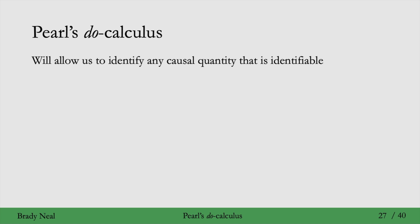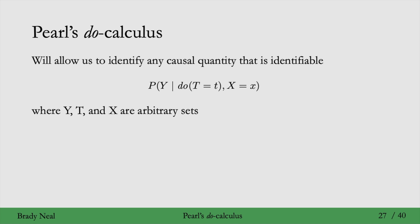Using Pearl's do-calculus, we'll be able to identify any causal quantity that is identifiable, keeping in mind that not all causal quantities are identifiable. Here is a general, non-counterfactual causal quantity that you could be interested in: P of y given do(t) comma x, where y, t, and x are arbitrary sets.